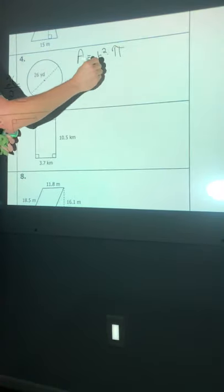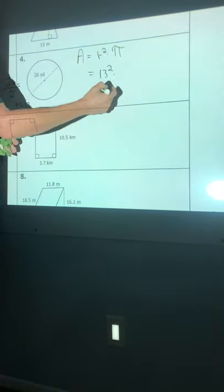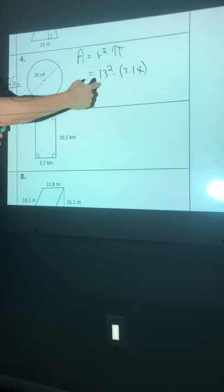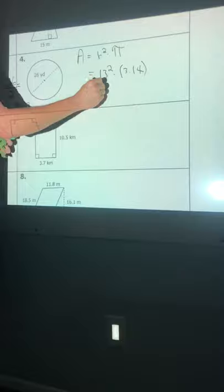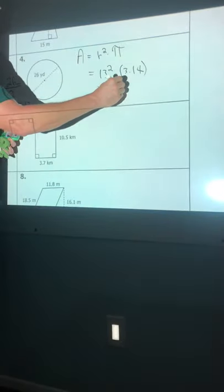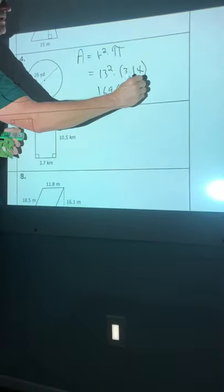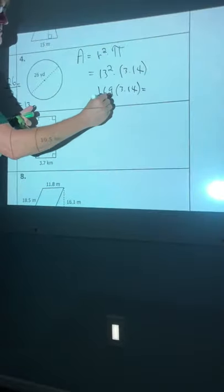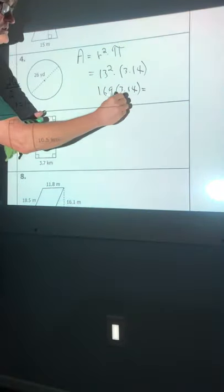All I got to do, come over here, plug in 13. Change pi to 3.14. 13 squared, 13 times 13, 169. Multiply that out. And here comes our exciting area, 169 times 3.14. And we get an area of 530.66.